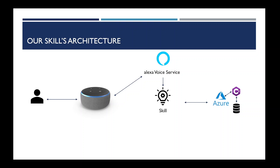Before we move forward, let's understand the skill's architecture. The user talks to an echo device — though it doesn't have to be an echo device; it could be your phone, smart TV, or any smart speaker with the Alexa app. The device talks to Amazon's hosted voice service, which is a natural language processor that listens to your voice and converts it to commands. Those commands go to the skill, which acts as an ear and mouth for the device.